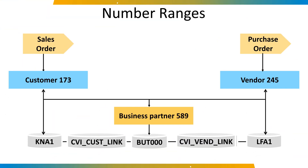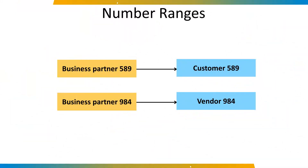The number range of the business partner is controlled by the BP group, while the number range of the customer or vendor is controlled by the FI account group. There are different types of number range assignment. In the first type, the same business partner number is kept for the customer or vendor. In the second type, the business partner number range is different from the customer or vendor master number range.